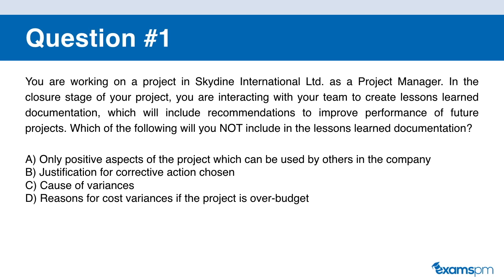Let's get started. You are working on a project at Skydine International Limited as a project manager. In the closure stage of the project, you are interacting with your team to create the lessons learned documentation, which will include recommendations to improve performance for future projects. Which of the following will you NOT include in the lessons learned documentation? A: only positive aspects of your project. B: justifications for corrective actions chosen. C: causes of variance. D: reasons for cost variance if the project is over budget.